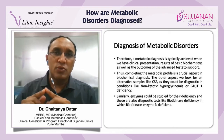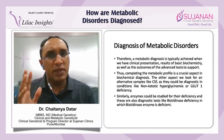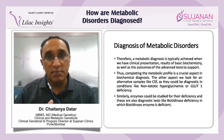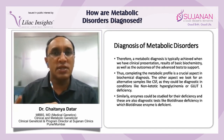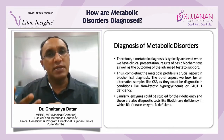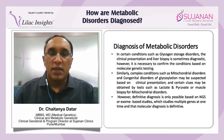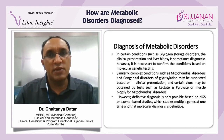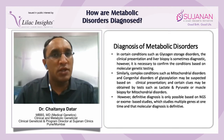Sometimes alternative samples like CSF may be required and could be diagnostic in conditions like non-ketotic hyperglycinemia or a GLUT1 deficiency. Similarly, enzymes could be studied for their deficiency — for example, in biotinidase deficiency you will find the biotinidase enzyme to be deficient. In certain conditions such as glycogen storage disorders, the clinical presentation and liver biopsy are sometimes diagnostic. However, it is necessary to confirm the condition based on molecular genetic testing.